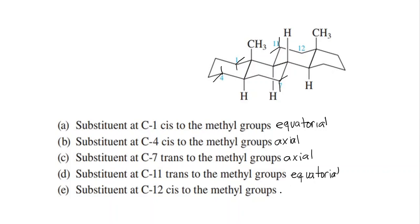Part e: substituent at C12, cis to the methyl groups. The methyls are up. Up is equatorial and down is axial. So cis is up, and up is equatorial.